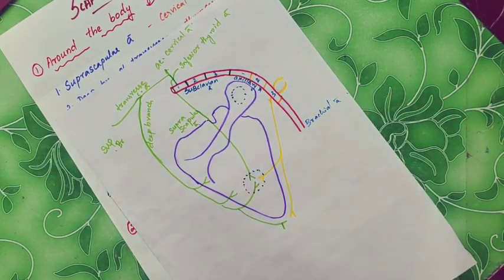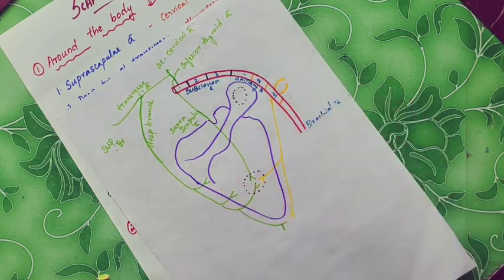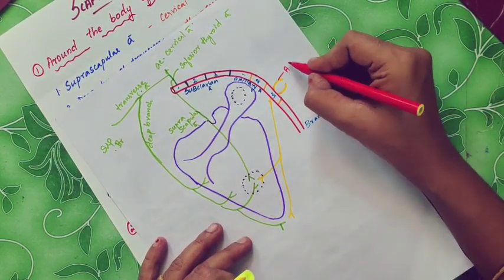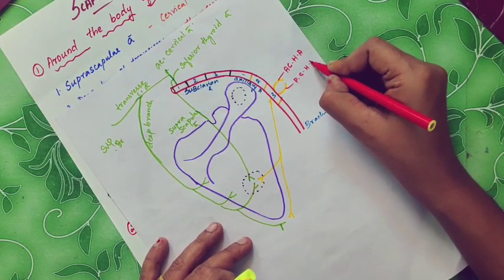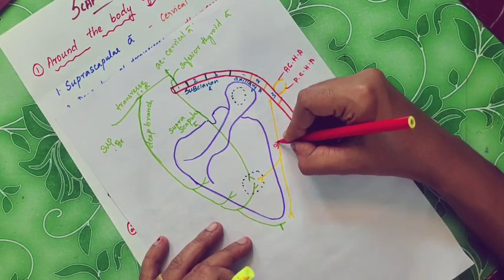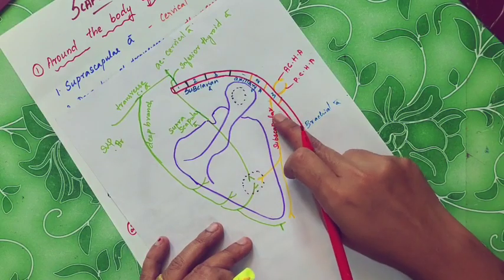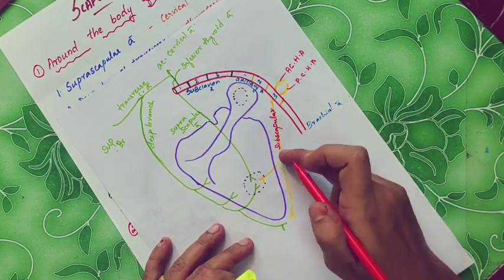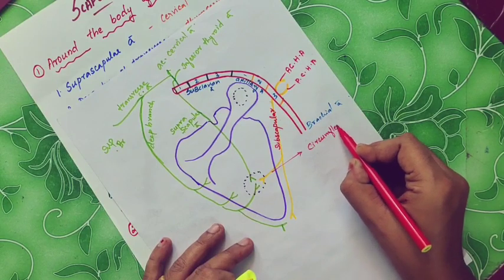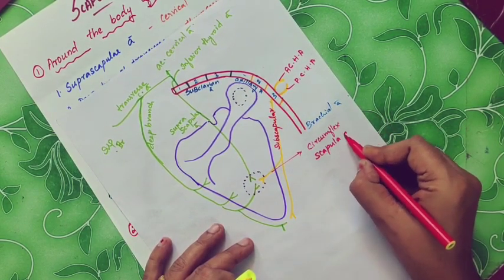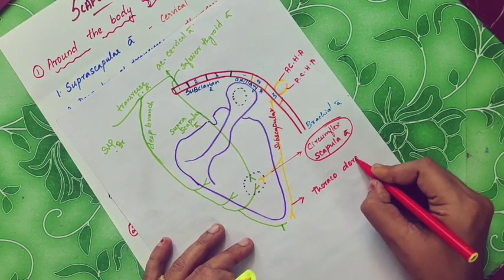The third part of the axillary artery has three branches: the anterior circumflex humeral artery, the posterior circumflex humeral artery, and the subscapular artery. The subscapular artery further divides into the circumflex scapular artery and the thoracodorsal artery.